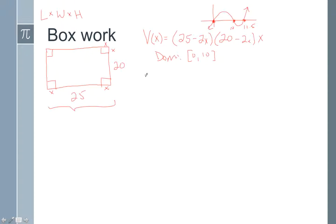If we were to find V of x as an expanded polynomial, we would get the function 4x to the third minus 90x squared plus 500x. That's just by doing the FOIL and distributing in the x. If we took the derivative of the volume function, we get 12x squared minus 180x plus 500. This is not a factorable quadratic.